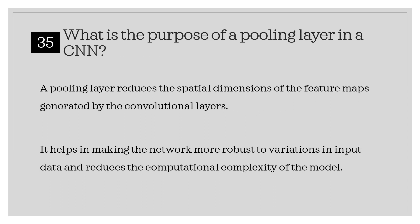What is the purpose of a pooling layer in a CNN? A pooling layer reduces the spatial dimensions of the feature maps generated by the convolutional layers. It helps in making the network more robust to variations in input data and reduces the computational complexity of the model.